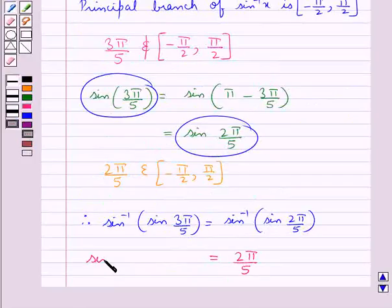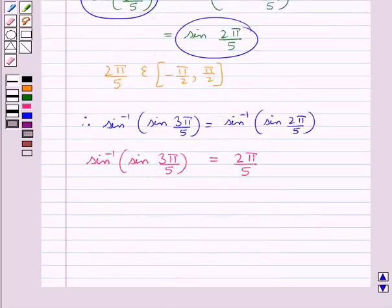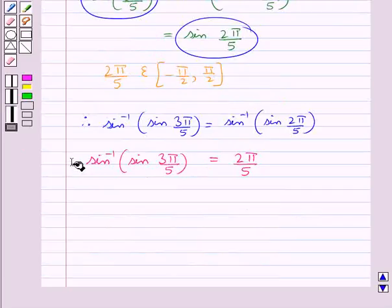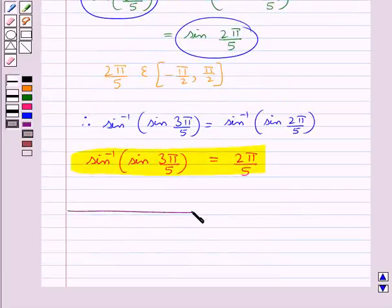Thus sine inverse of sine 3 pi by 5 is equal to 2 pi by 5. This is the required value. This completes the session. Hope you have understood the solution of this question.